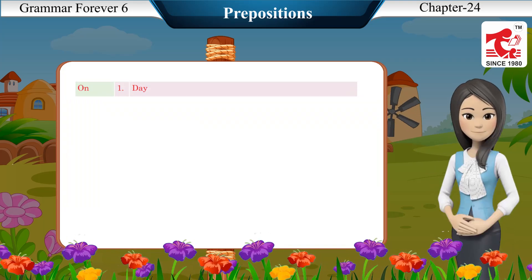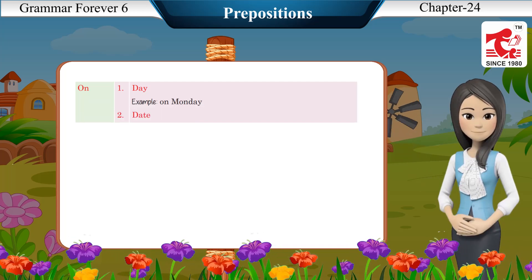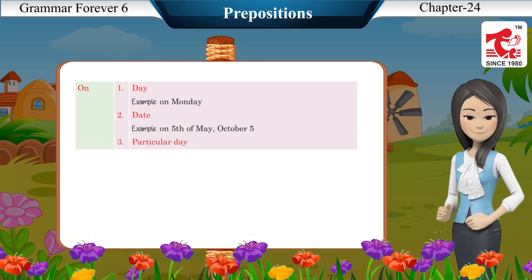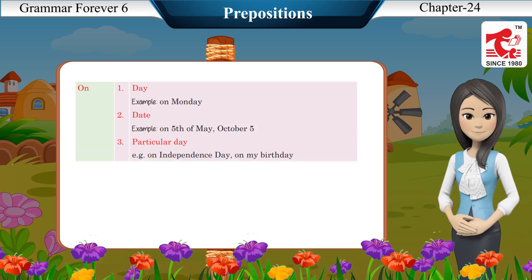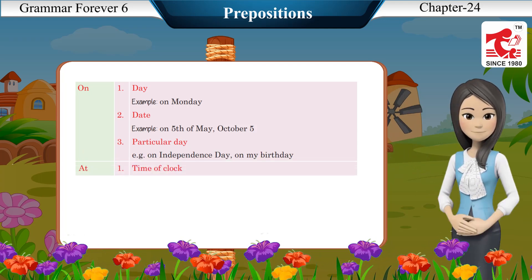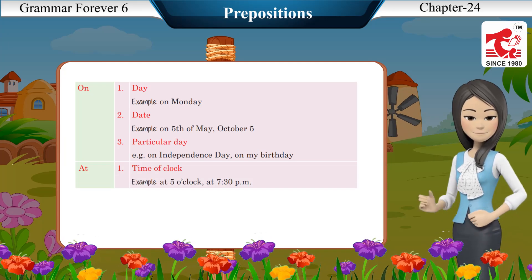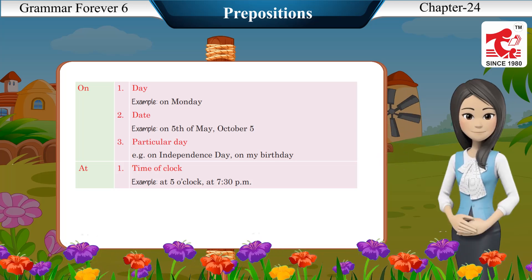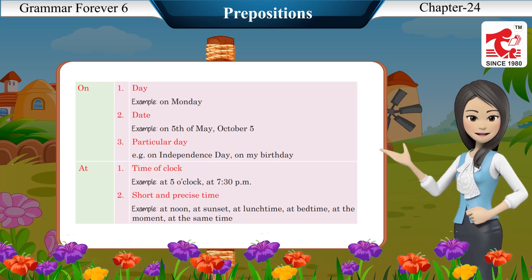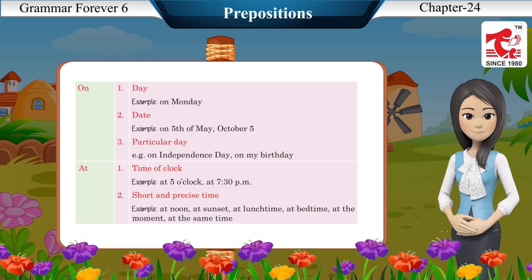Preposition 'on' for time: used for a day — e.g., on Monday; for a date — e.g., on 5th of May, 5th October; for a particular day — e.g., on Independence Day, on my birthday. Preposition 'at' for time: used for time of the clock — e.g., at 5 o'clock, at 7:30 PM; for short and precise time — e.g., at noon, at sunset, at lunchtime, at bedtime, at the moment, at the same time.